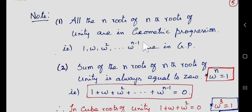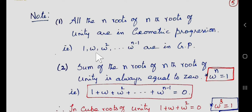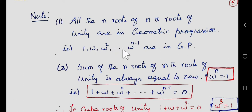Now let us see the properties of the nth roots of unity. The first property is that all the nth roots of unity are in GP, that is geometric progression. The nth roots of unity are 1, omega, omega square, etc., up to omega power n minus 1, and all these roots are in GP. The common ratio is omega by 1, or omega square by omega, which equals omega.